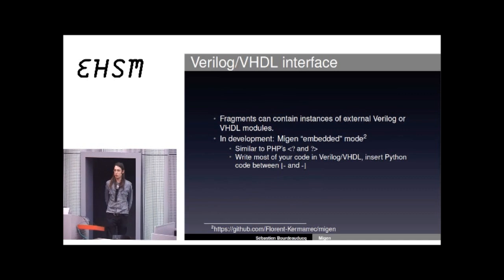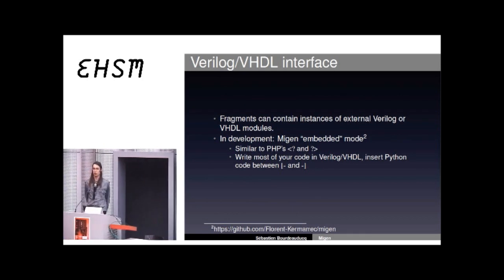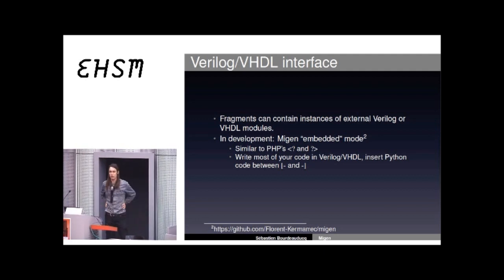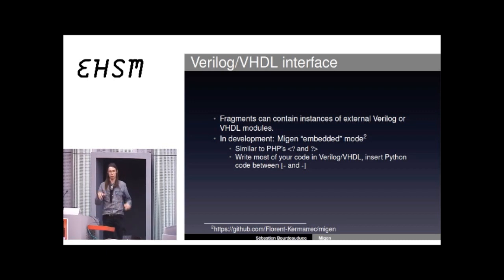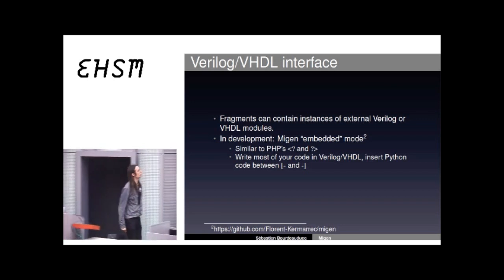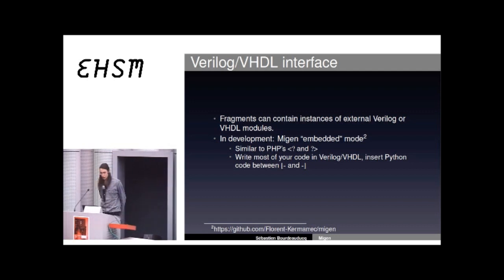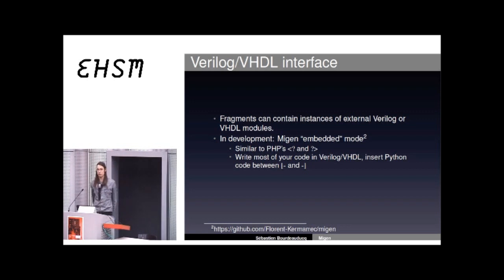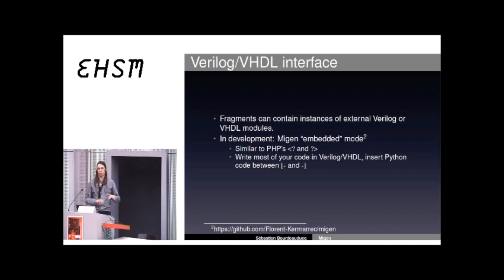A lot of people in the FPGA or ASIC industry like to reuse code and fear they cannot do so when using Migen — but that's not true. You can instantiate any VHDL or Verilog module from your Migen code, or instantiate your Migen code from another VHDL or Verilog module. There is even someone developing what is called Migen embedded mode, which would work a bit like PHP — you write most of your design in VHDL and insert special characters to invite some Python auto-generated statements inside the body of your VHDL or Verilog code.